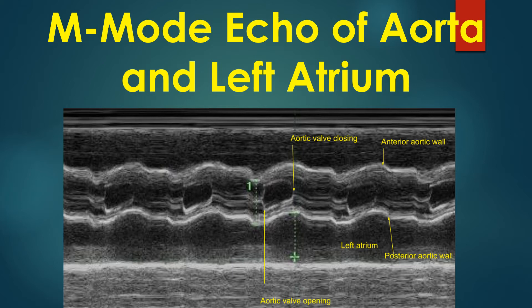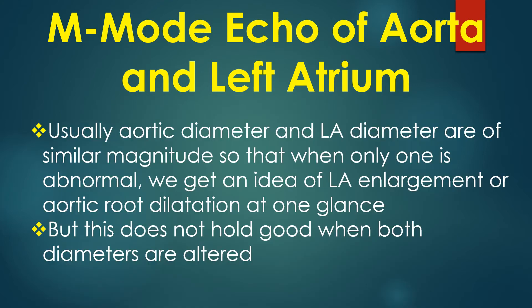Thickened leaflets with poor opening excursion occur in aortic stenosis. Usually, the aortic diameter and left atrial diameter are of similar magnitude, so that when only one is abnormal, we get an idea of left atrial enlargement or aortic root dilatation at a glance. But this does not hold good when both diameters are altered.